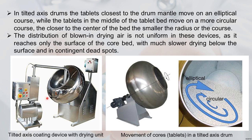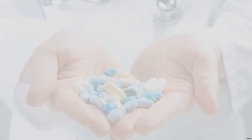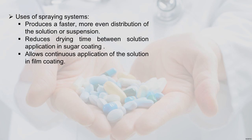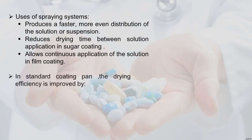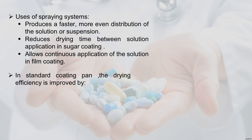You can see the tilted-axis coating device with the drying unit and the movement of tablet cores in tilted-axis drums. The spraying system produces faster and more even distribution of the solution or suspension, reduces drying time between solution applications in sugar coating, and allows continuous application of coating solution in film coating.